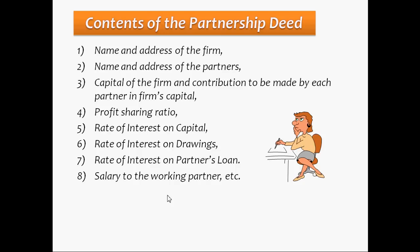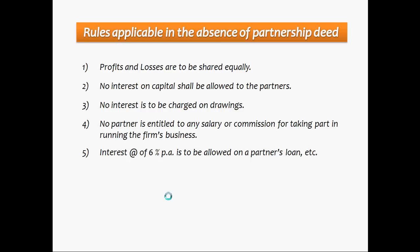Now let's see what will happen if there is no partnership deed. In that case we will follow the provisions of the Indian Partnership Act 1932. Some of these are listed here. The first rule is that all profits and losses are to be shared equally — if in the partnership deed there is no profit sharing ratio given, then all profits and losses are to be shared equally. No interest on capital shall be allowed to the partners. No interest is to be charged on drawings. No partner is entitled to any salary or commission for taking part in running the firm's business. And interest at the rate of 6% per annum is to be allowed on a partner's loan, not exceeding 6%. Many more rules are there, but these are the important ones from an accounting point of view.